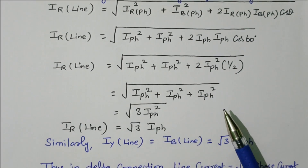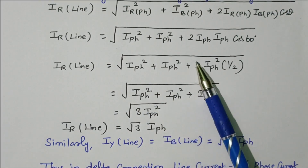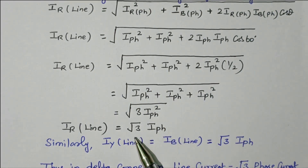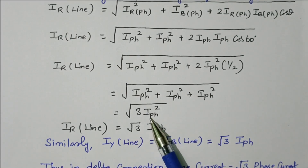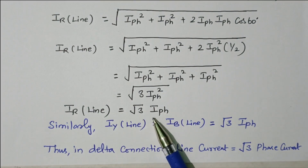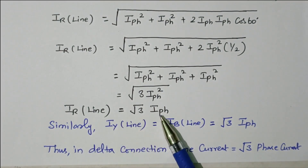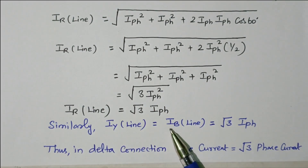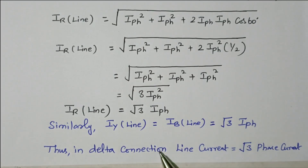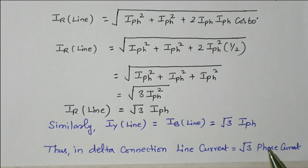Going further with simplification: I_phase² + I_phase² + 2·I_phase²·(1/2) = I_phase² + I_phase² + I_phase² = 3·I_phase². Taking the square root gives √3 × I_phase. Therefore IR line = √3 × I_phase. Line current equals √3 times phase current. Similarly IY line = IB line = √3 × I_phase. So in delta connection, line current = √3 times phase current, while line voltage equals phase voltage.